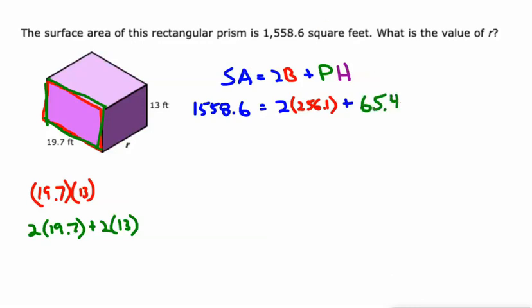And then the height of the prism is what we don't know. It's that distance right there; we'll call it r. This is just going to take a couple steps to solve this equation. So 512.2 when I multiply that 2 times 256.1, and then we got the 65.4r.